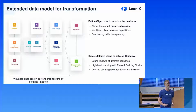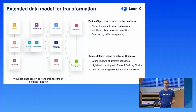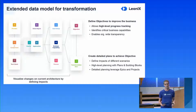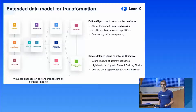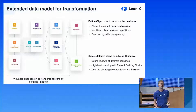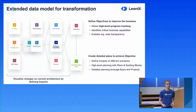The second fact sheet type is the transformation item, and you can leverage it to create detailed plans to achieve the objectives that you have formulated. Within the transformation items you can define impacts of those different scenarios, do high-level planning with plans and building blocks, and do very detailed planning by leveraging projects and epics as categories of transformation items.